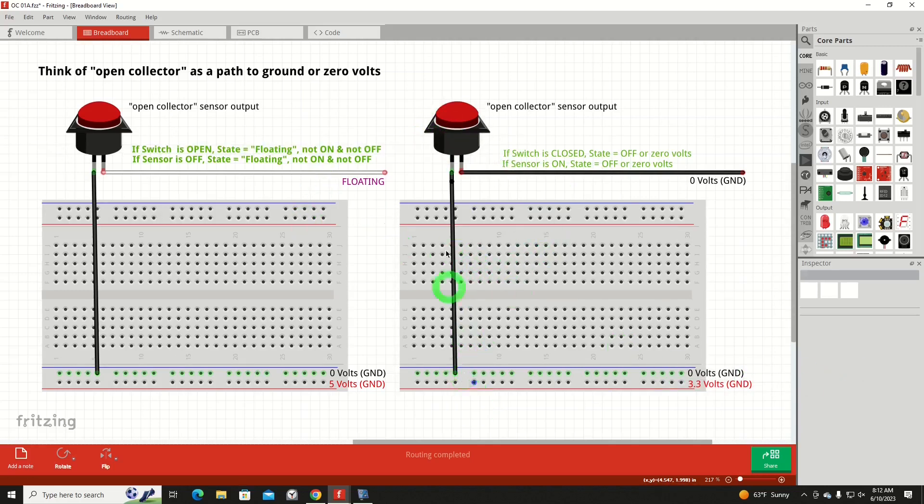Let's first see how we can get at least one of those states out of the device. Same circuit here on the right. This time the switch is closed. So if the switch is closed, the state would be off or zero volts. Or in other words, if the sensor is on or active, the state equals off or zero volts. That's all that can give us with any certainty.